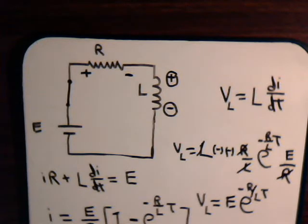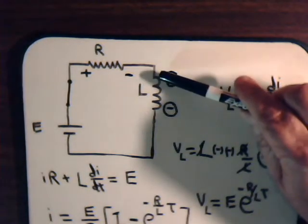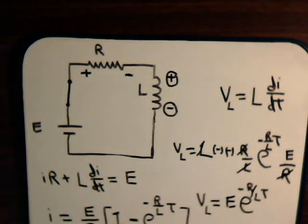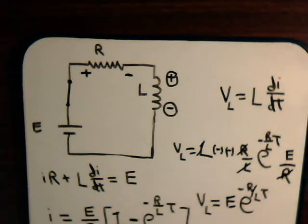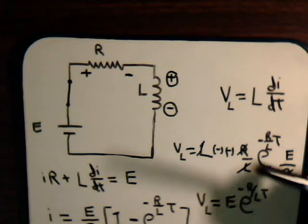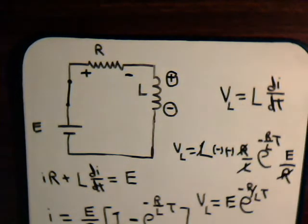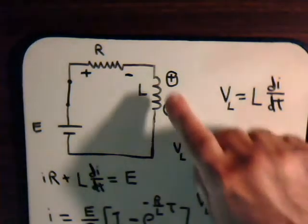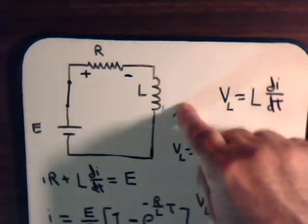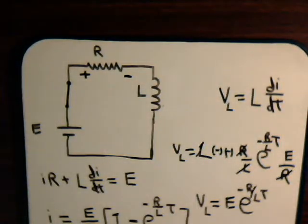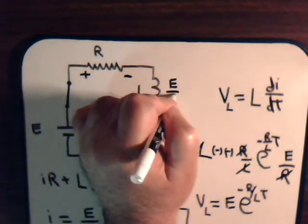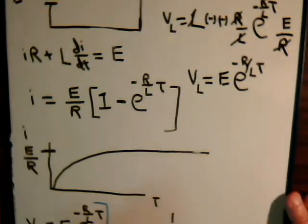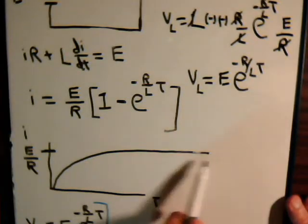And the reason why it falls off to zero is that even though the amount of current that's going through the coil is increasing, its rate of increase becomes smaller and smaller. Hence, the induced voltage becomes smaller and smaller until finally the current that falls through this coil is just a steady state. It doesn't change at all anymore.